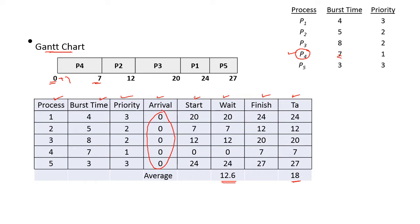The first process is P4 because it is having the highest priority, so it will execute first. The starting time of P4 is 0. The finish time is 7 because the burst time is 7, so finish time is 7.